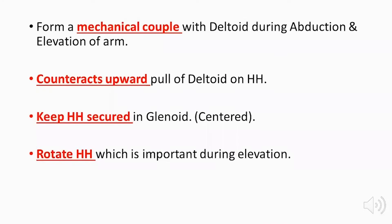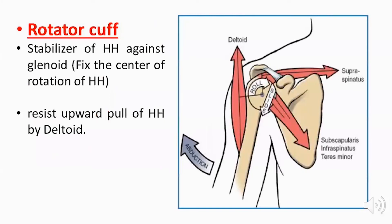The rotator cuff muscles form a mechanical couple together with the deltoid, allowing abduction and elevation of the arm. They also prevent the upward pull of the deltoid on the humeral head, keep the humeral head centered in the glenoid, and rotate the humeral head during elevation. The deltoid exerts an upward pull on the humeral head, while the supraspinatus centers it on the glenoid, and the subscapularis, infraspinatus, and teres minor act in the opposite direction to the deltoid.